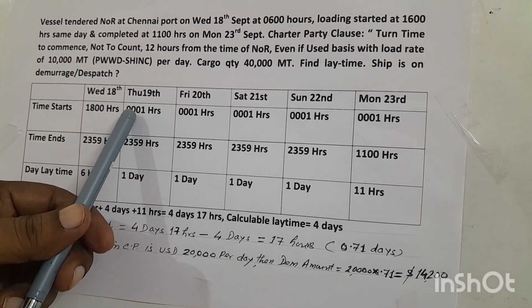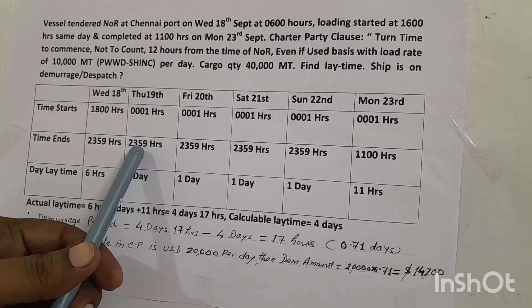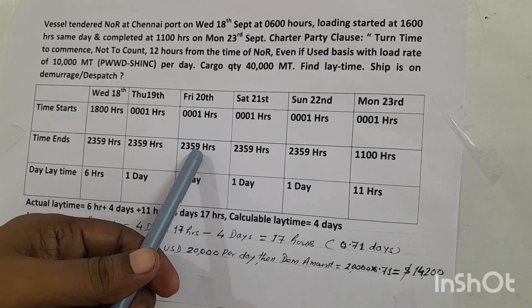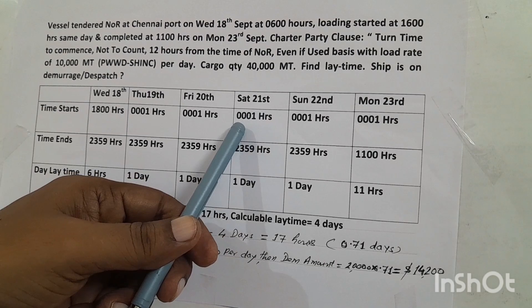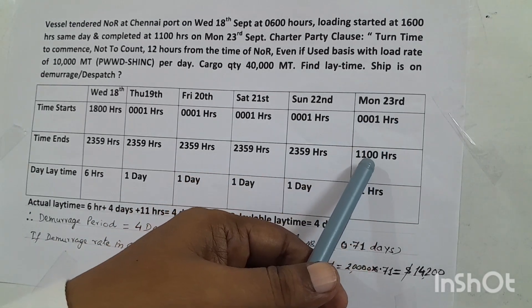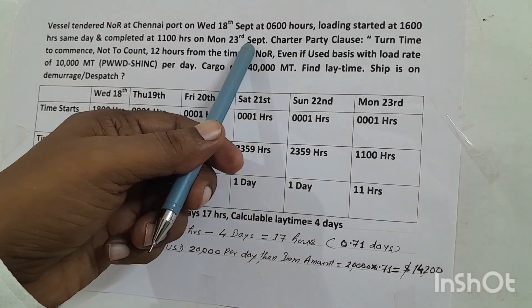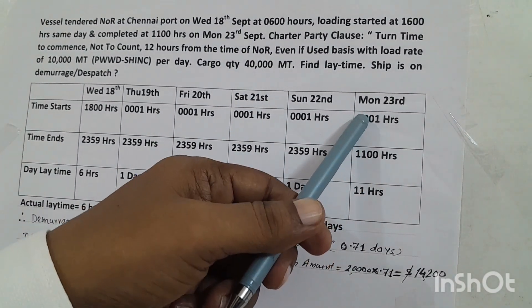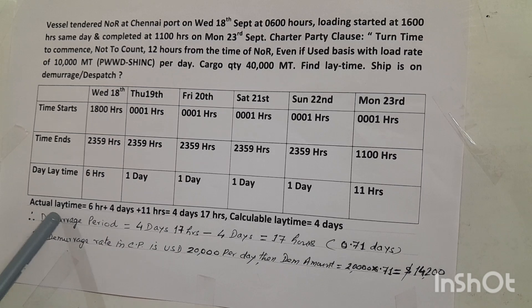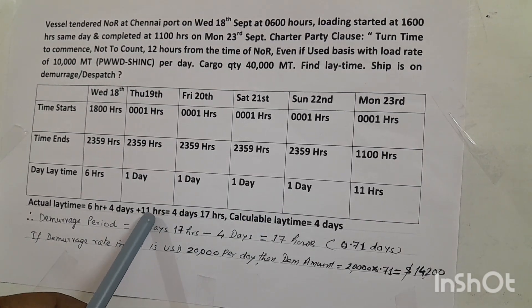From 19th through 22nd, operations run from midnight (0001) to midnight (2359), giving 1 full day each. On 23rd, operations run from midnight to 1100 hours — that is 11 hours. So the total actual time at port is 6 hours on day one, plus 4 full days (19th to 22nd), plus 11 hours on 23rd.